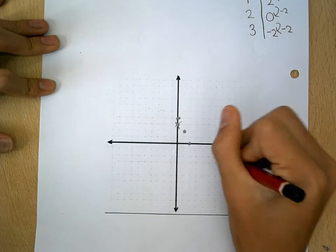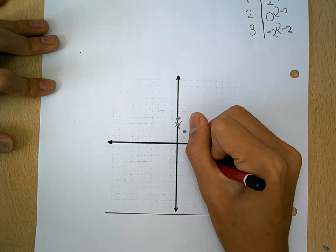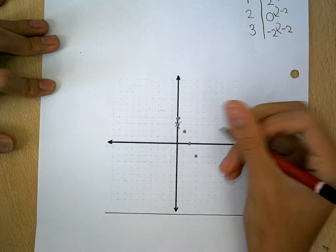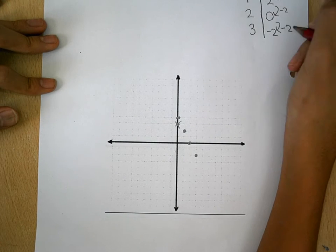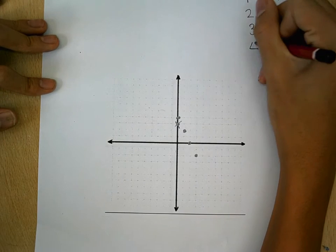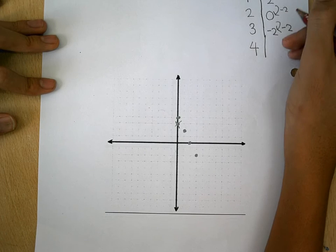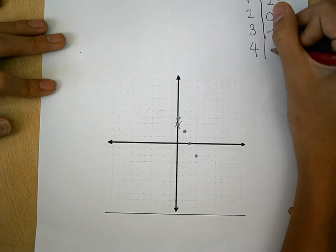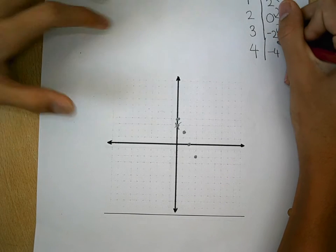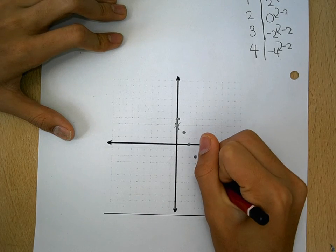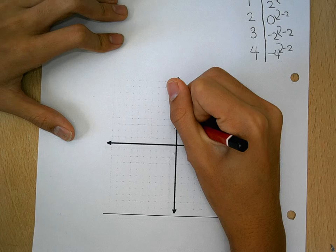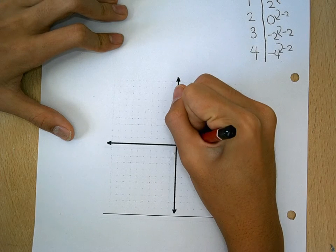So 3, negative 2. It doesn't look right, so I'll add one more. 4 times negative 2 is negative 8, plus 4 equals negative 4. You see the pattern, minus 2. If you're right, you should have a line.